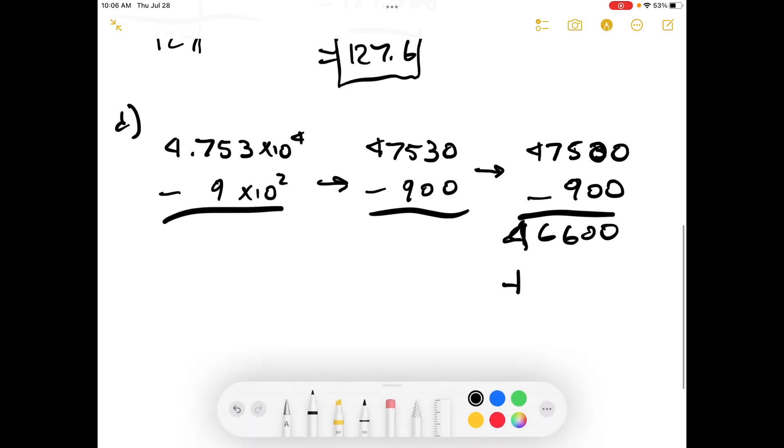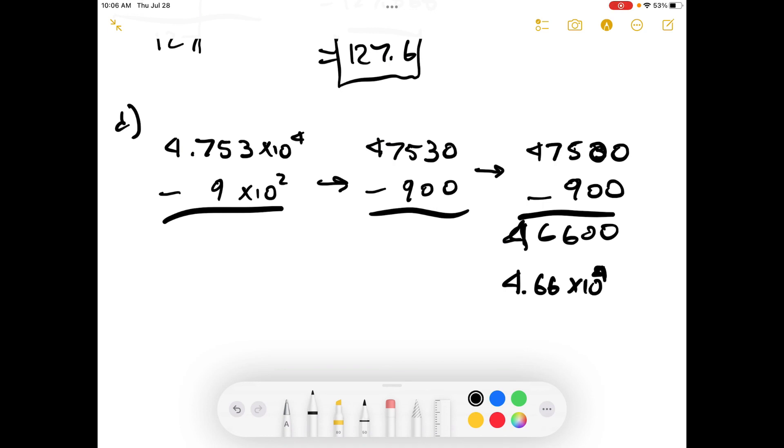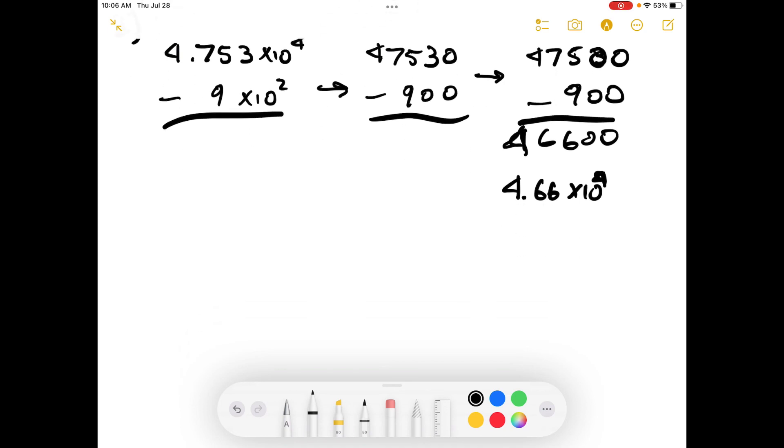So then our estimated answer is 4.66 times 10 to the 4. So that's pretty close. All right. So then we actually do the calculator. The calculator equals 46630. And those subtraction to the decimal place. So we get the same answers if we were in our estimation. So that is the answer to part C.